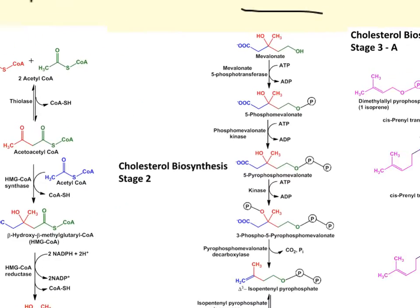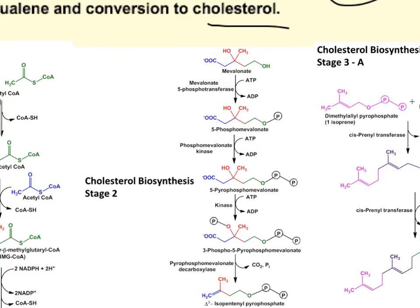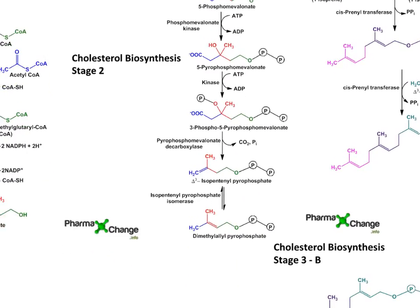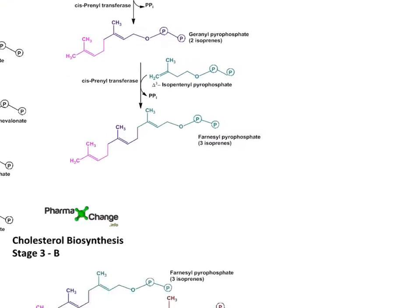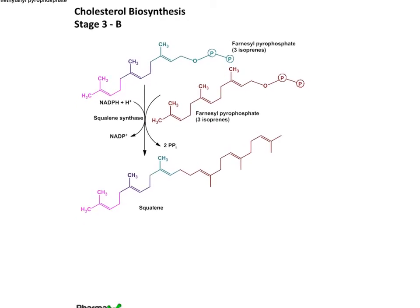After that, the mevalonate goes through the addition of three ATPs and a decarboxylation step to produce isopentenyl pyrophosphate, and then the isomer of isopentenyl pyrophosphate is produced. That isomer gets added with two more isopentenyl pyrophosphates to produce farnesyl pyrophosphate. Then the farnesyl pyrophosphate gets combined with another farnesyl pyrophosphate to produce squalene.